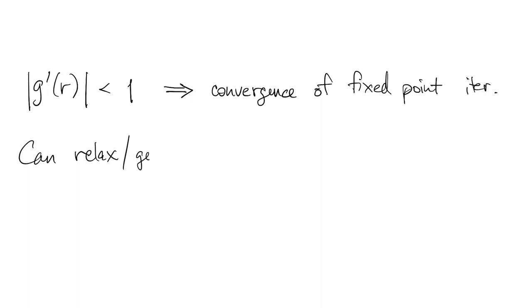Now we have this condition: magnitude of g prime of r less than 1. That implies convergence for the fixed point iteration, at least if you start closely enough. This condition can be relaxed a little bit or generalized to other situations.